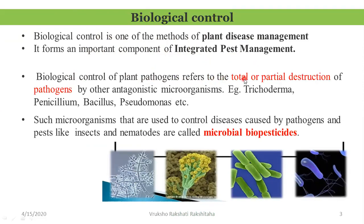Biological control refers to the total or partial destruction of pathogens by other antagonistic microorganisms. For example, Trichoderma, Penicillium, Bacillus and Pseudomonas. You can see the pics here — this is Trichoderma, Penicillium, Bacillus and Pseudomonas. Such microorganisms used to control diseases caused by pathogens, and pests like insects and nematodes, are called microbial biopesticides.